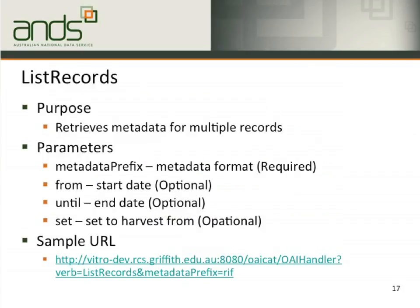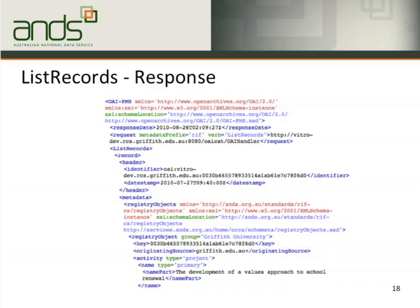ListRecords allows you to retrieve metadata for multiple records. You must specify which metadata format you want, and you can optionally filter by a time period or a specific set. This example shows requesting all RIF-CS metadata records. In the response XML file, you can see registry object group is equal to 'groups unit', which means this is a party record, and there are many records returned.